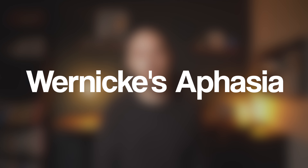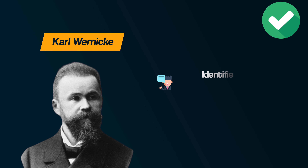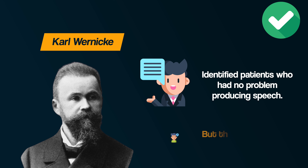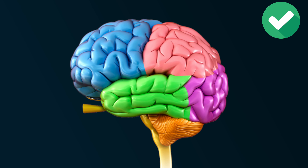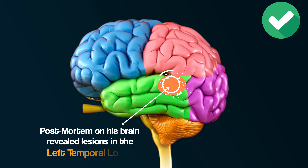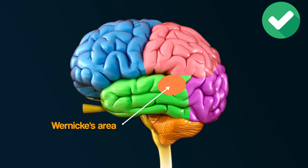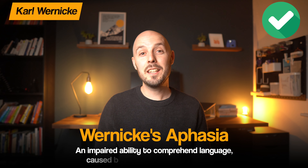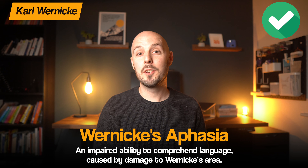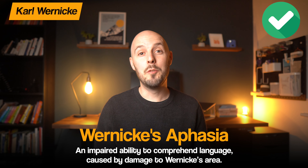Secondly, Wernicke's aphasia. About ten years later, Karl Wernicke identified patients who had no problems producing speech but were unable to comprehend language. When he examined their brains, he found lesions at a junction of the left temporal lobe, close to the junction with the parietal and occipital lobes. This area has become known as Wernicke's area, associated with the understanding of spoken and written language, further demonstrating how the brain may be localised for function. If diagnosed with Wernicke's aphasia, a person has an impaired ability to comprehend language, caused by damage to Wernicke's area.